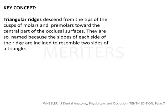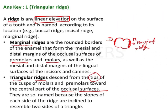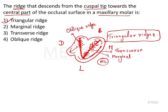Coming to the key concept: the triangular ridge descends from the tip of the cusp of the molars and premolars and meets the central part of the occlusal surface. The confluence of triangular ridges can lead to formation of either a transverse ridge or an oblique ridge in the case of maxillary molars. Importantly, the mesolingual cusp of the maxillary molar has two triangular ridges. So the answer is triangular ridge — that which descends from the cuspal tip towards the central part of the occlusal surface in the maxillary molar.